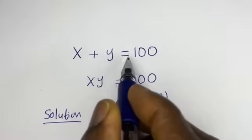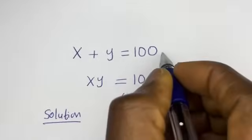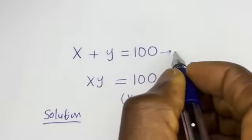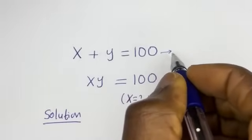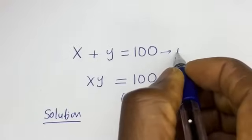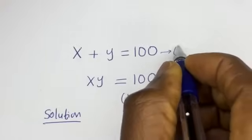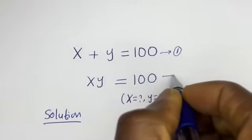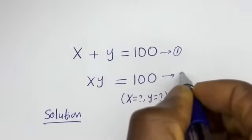x plus y is equal to 100 — let's call this equation 1. xy is equal to 100 — let's call this equation 2.